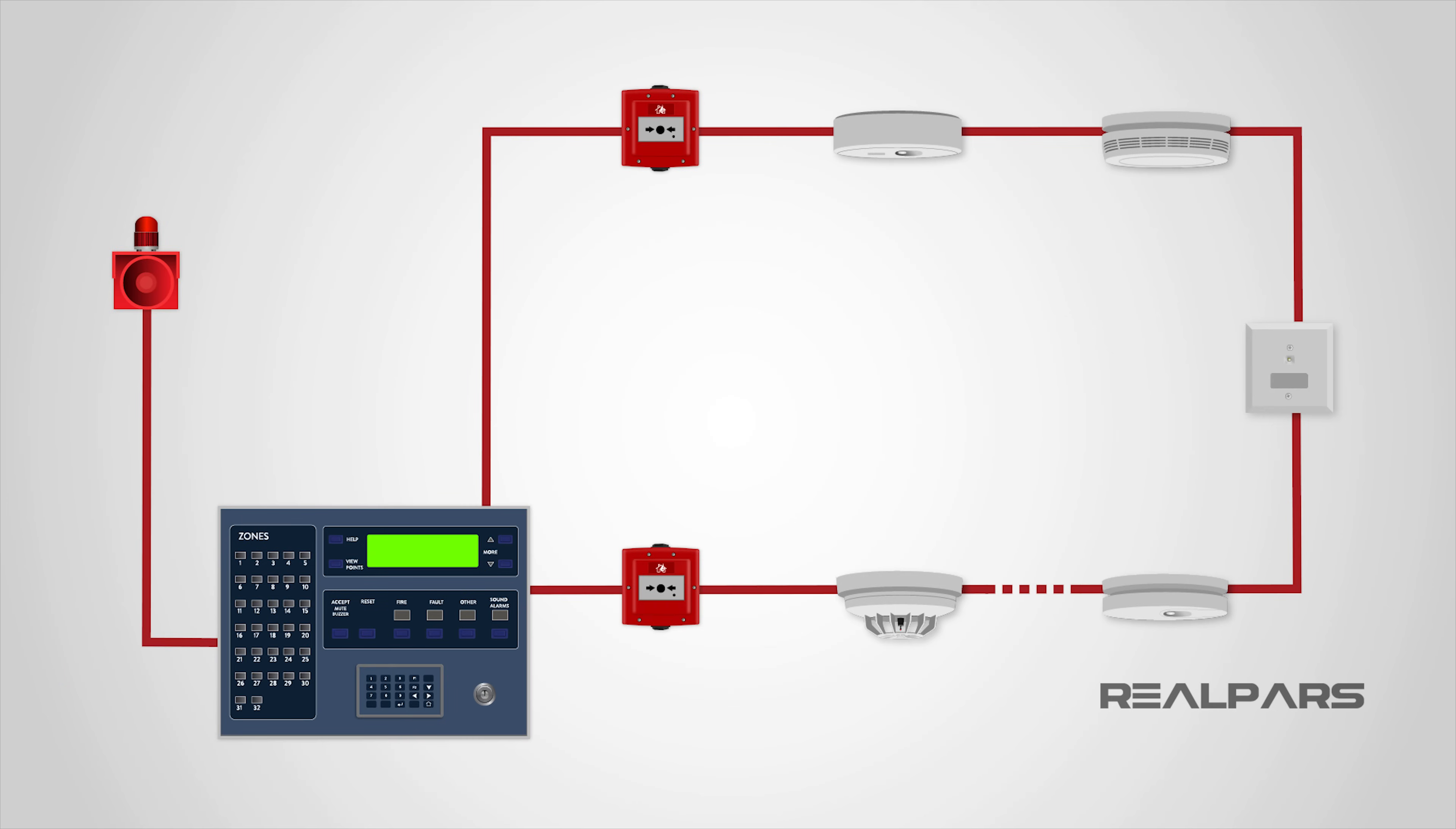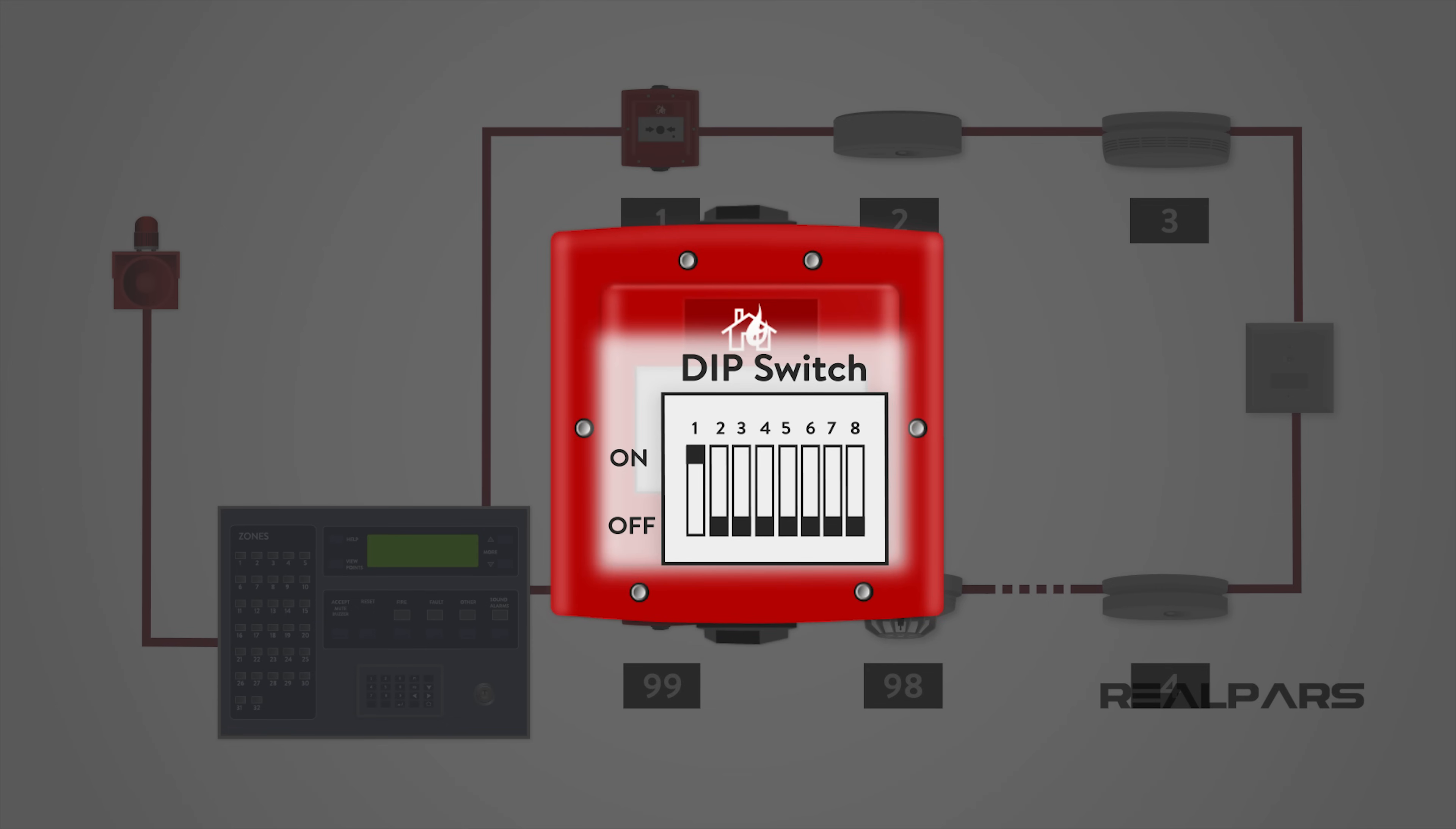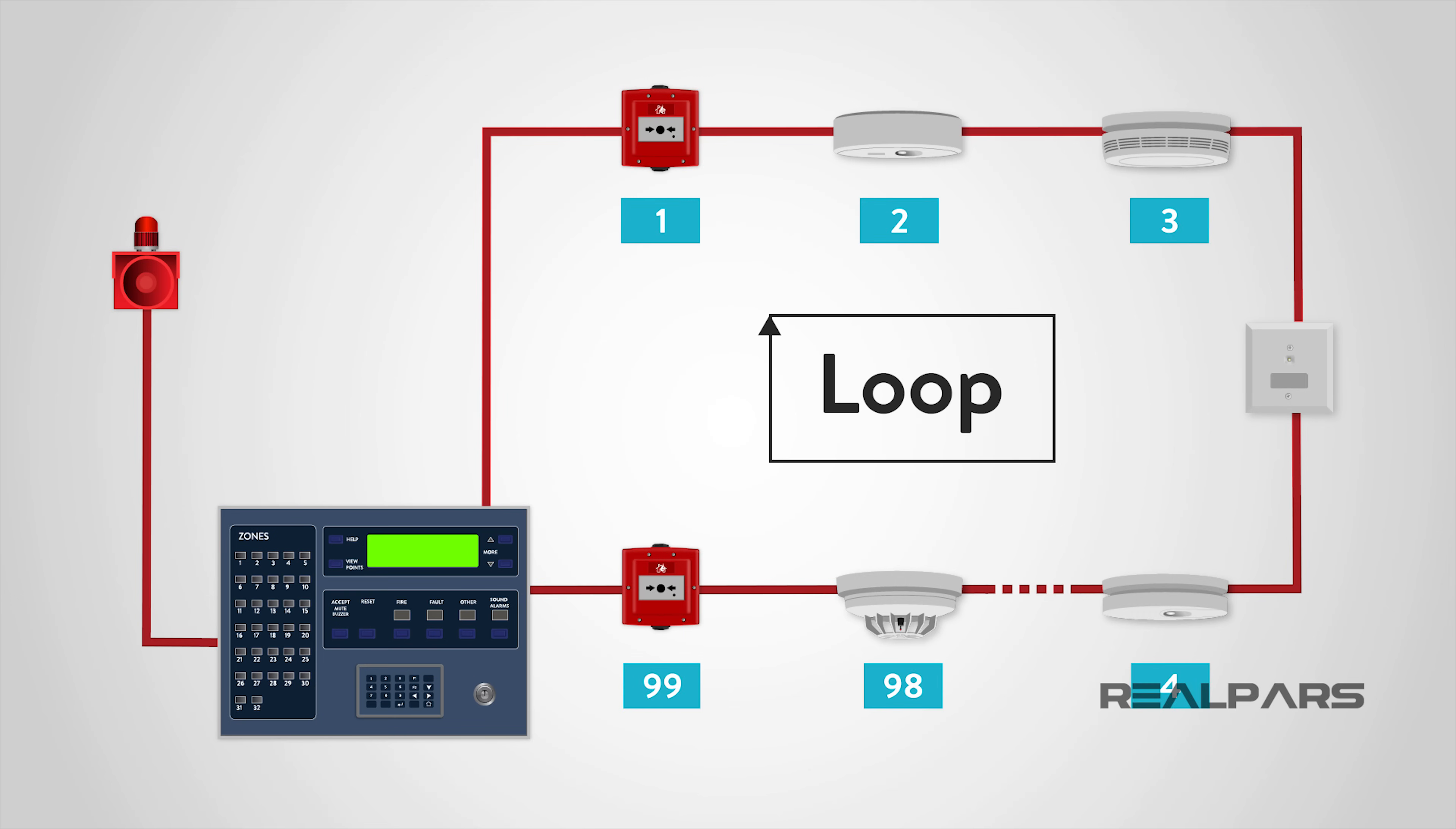The detection principle of an addressable system is the same as a conventional system, except that each detector is given a set address, usually by means of a dip switch, and the control panel can then determine exactly which detector, or call point, has initiated the alarm. The detection circuit is wired as a loop and up to 99 devices may be connected to each loop.